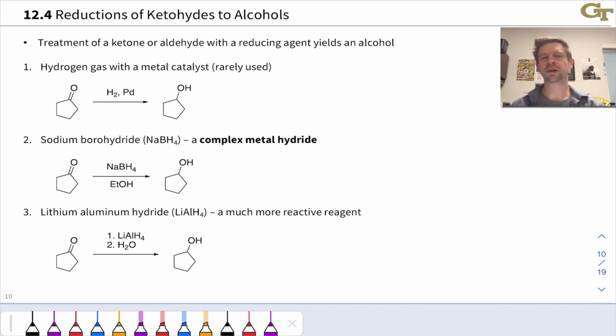In this video, we're going to discuss the reductions of ketones and aldehydes to alcohols affected using reducing agents. First of all, let's note the treatment of a ketone or aldehyde with a reducing agent yields an alcohol. An alcohol is at a lower oxidation level than a ketone or aldehyde, since this reaction is going to replace the CO double bond with a CO single bond and a new CH bond.